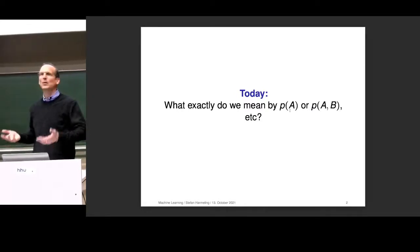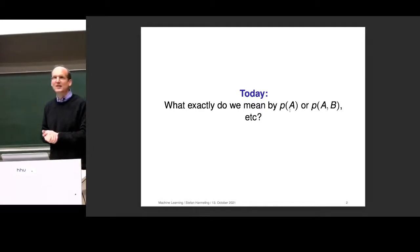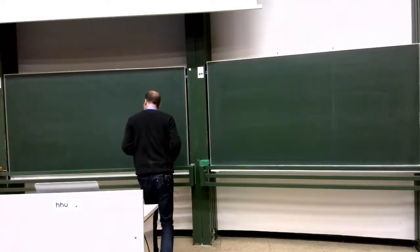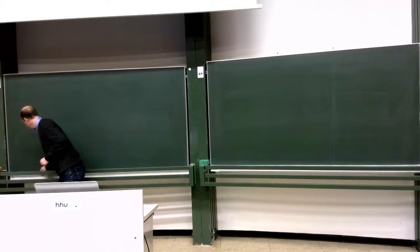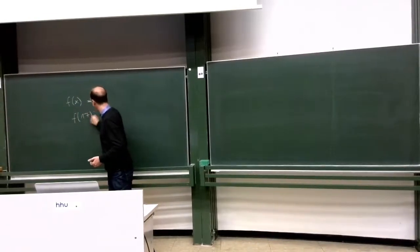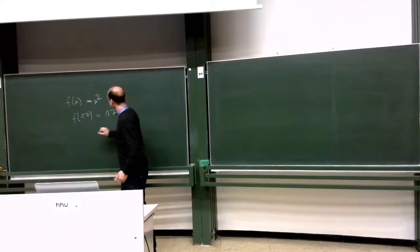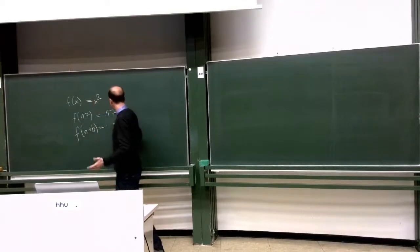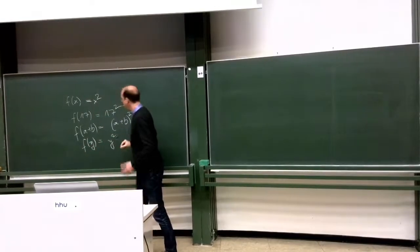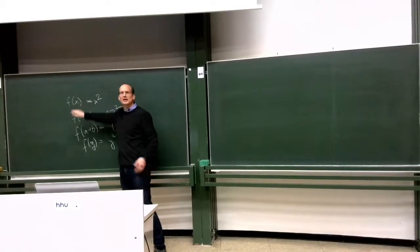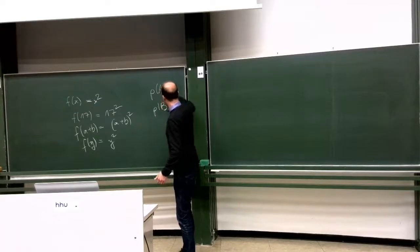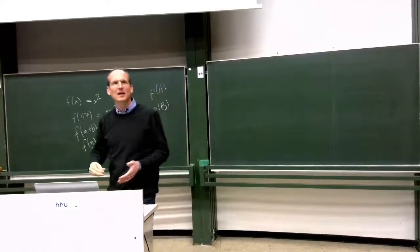Change of variable is always allowed. If you have a function F of X equal to X squared, then F of 17 is 17 squared, F of A plus B is A plus B squared, and F of Y is Y squared. The name of the variable doesn't matter. But with P of something, somehow those two are totally different things. The notation is kind of weird, and we try to make it more precise today.